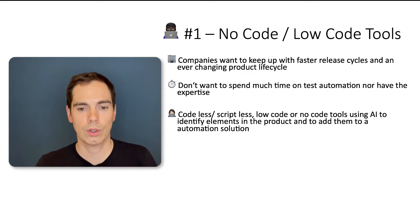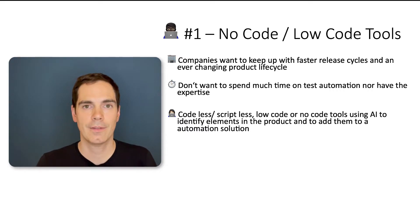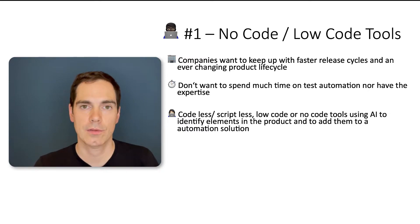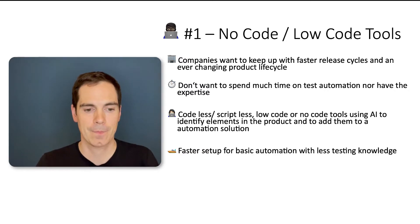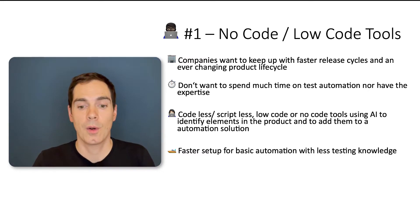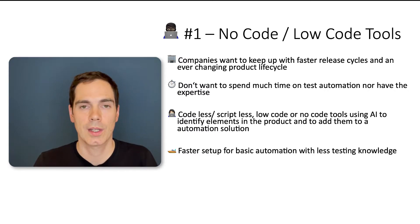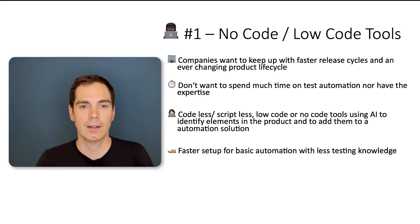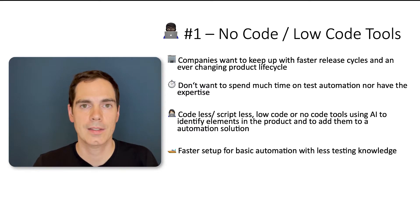Those companies really like to work with low-code or no-code tools — also called codeless, scriptless, or low-code tools. They use AI to identify elements on screen, web elements, native elements, and web applications, adding them into the automation solution. They perform screen comparison, read CSS selectors, and create elements the framework can interact with. It offers a much faster setup for basic automation with less testing knowledge, sometimes with a one-click installation.